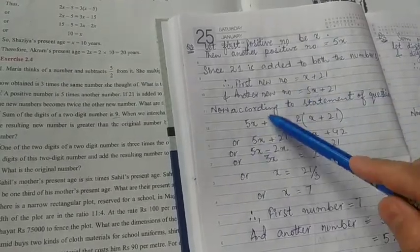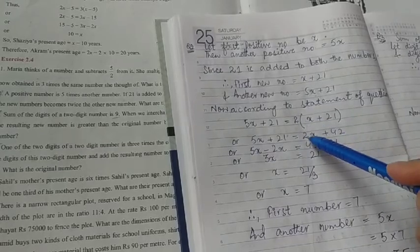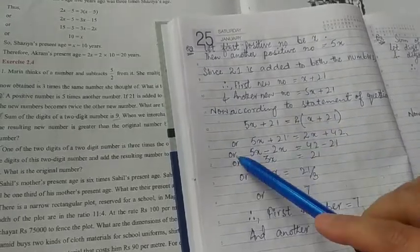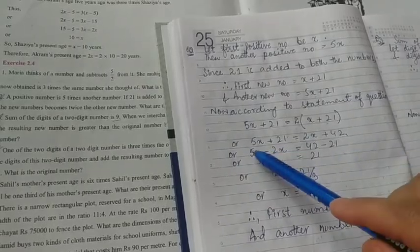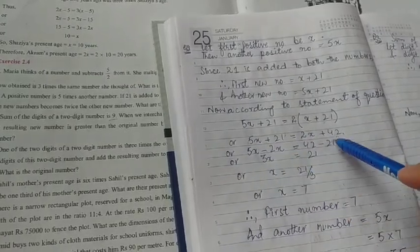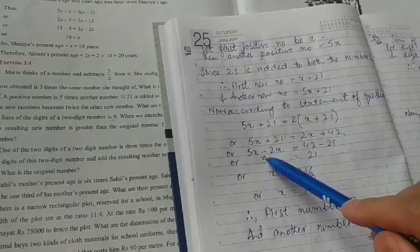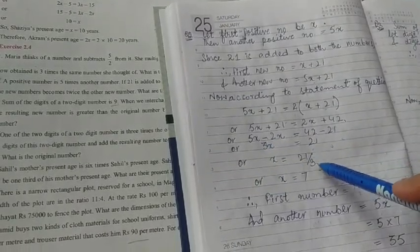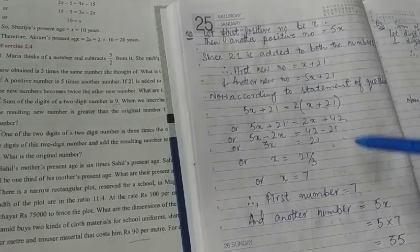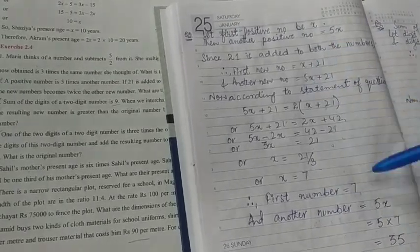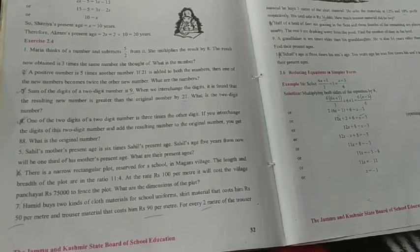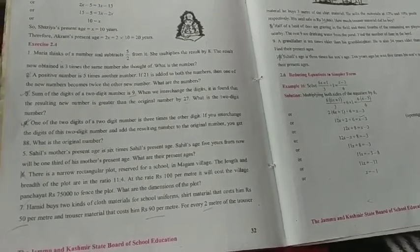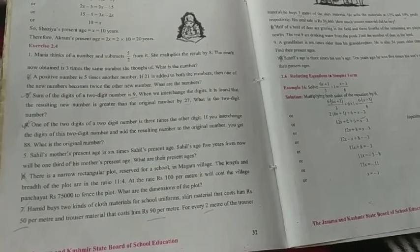Five x plus twenty one is equal to two into x, two x plus two into twenty one is forty two. Variable to one side and constants to one side. Five x minus two x equals to forty two minus twenty one. It is three x equals to twenty one, or x will be equal to seven. So the first number is seven and the second number will be five into seven, that is thirty five. Students, that's all for today, I hope you have understood it. Jazakallah.